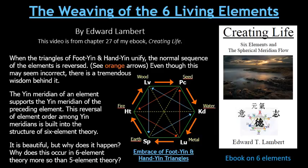The yin meridian of an element supports the yin meridian of the preceding element. This reversal of element order among yin meridians is built into the structure of Six Element Theory, which is seen in the Spherical Meridian Flow. It is beautiful, but why does it happen? Why does this occur in Six Element Theory more so than in Five Element Theory? This is what I'm going to be developing.